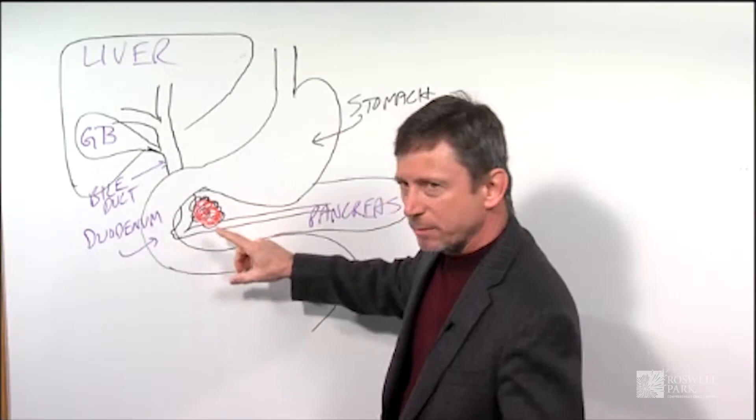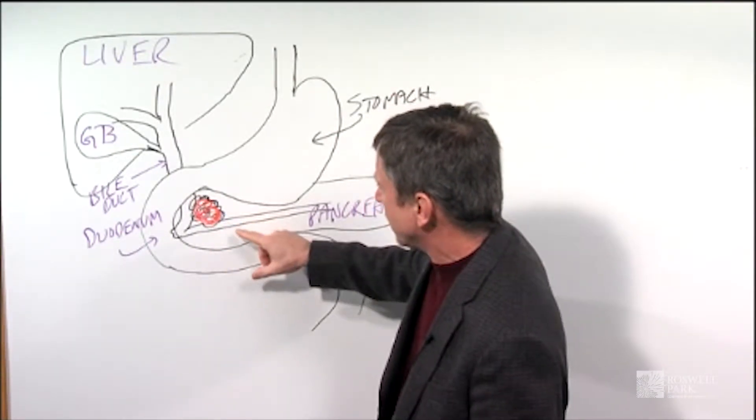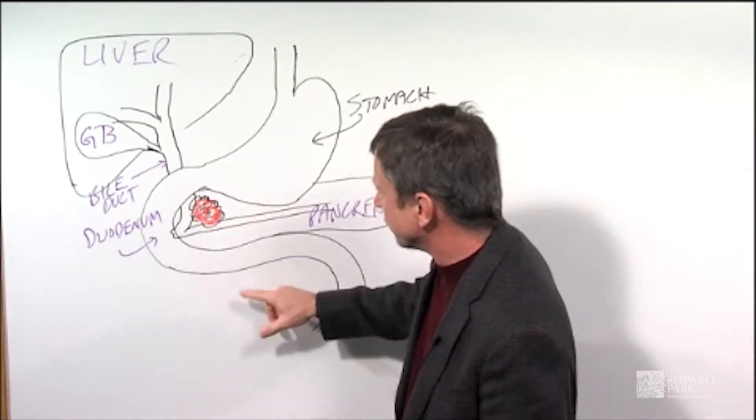The Whipple procedure, as I mentioned, is done for a number of different kinds of cancers. In this case I've drawn a picture of a pancreas tumor.